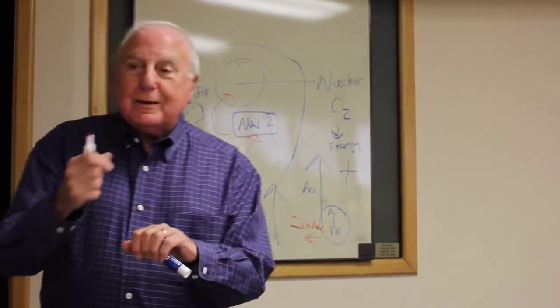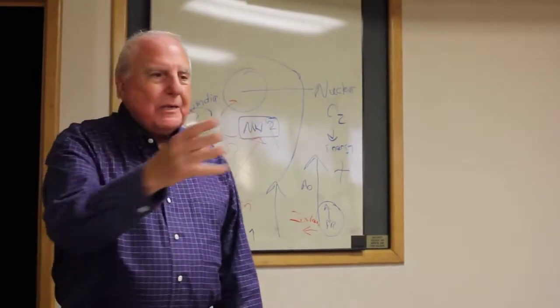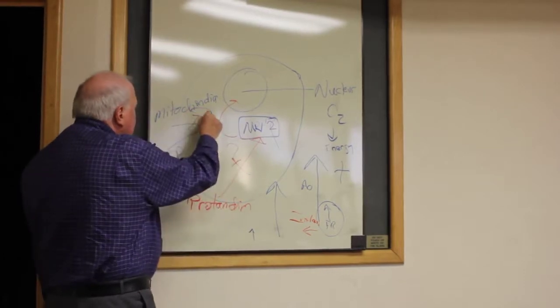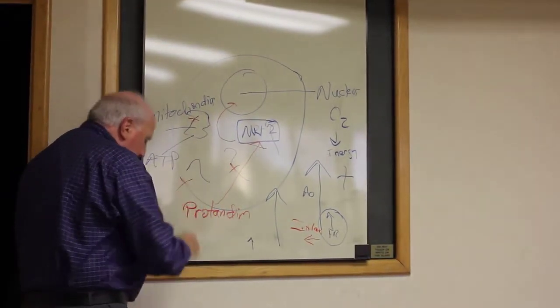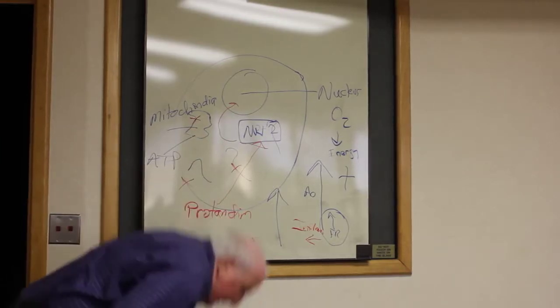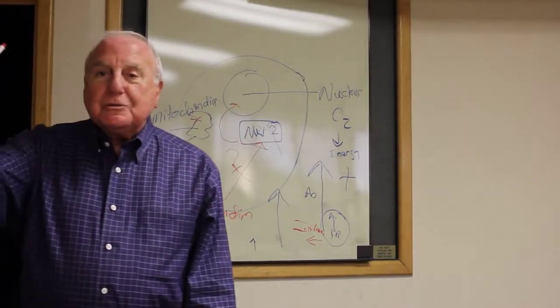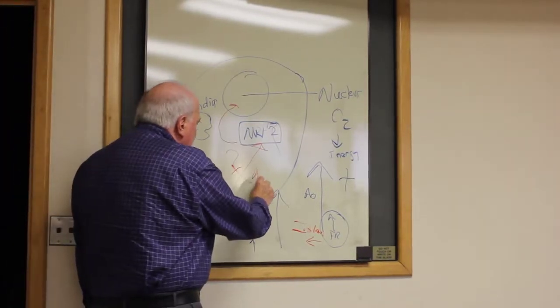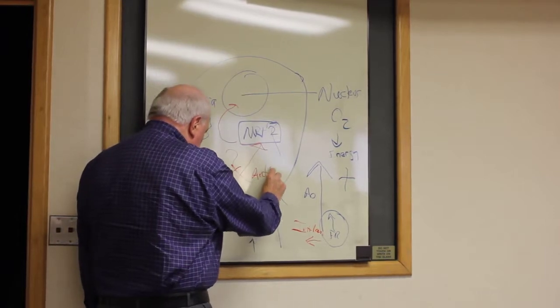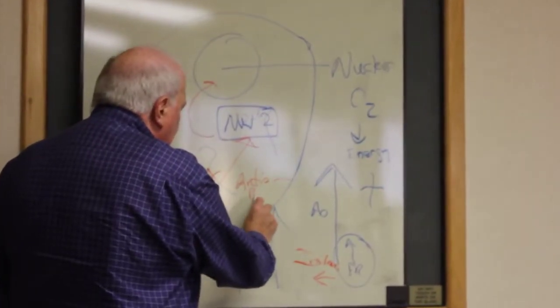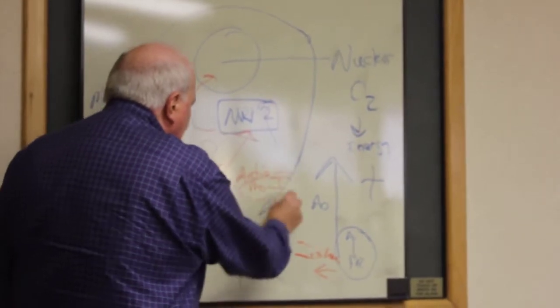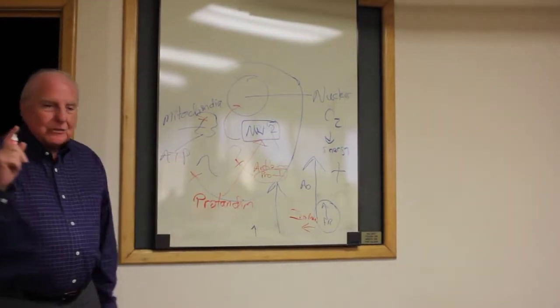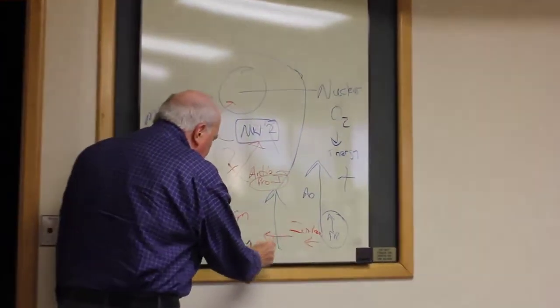So when you have free radicals, you get a response from the body called inflammation. And that is the reaction that is uniformly going to occur when you have that free radical not neutralized. Why? Because that free radical, when it doesn't get neutralized, attaches any place it wants to. It can attach to one of the engines here. It can attach to the mitochondria. It can attach to the cell membrane. It can attach any place. And when it does, it injures the cell.